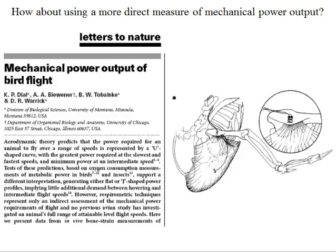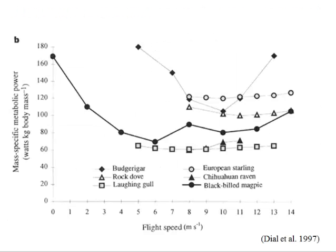So these guys subsequently measured mechanical power used by magpies flying by the use of strain gauges glued to the humerus. The strain gauge will actually measure the amount of bending in the bone, therefore the amount of power the muscles exerting on that bone, and not have this indirect measure of oxygen consumption.